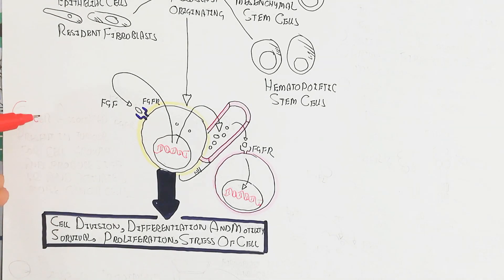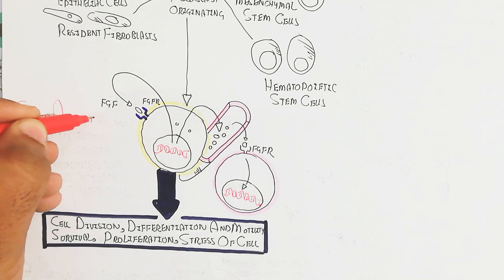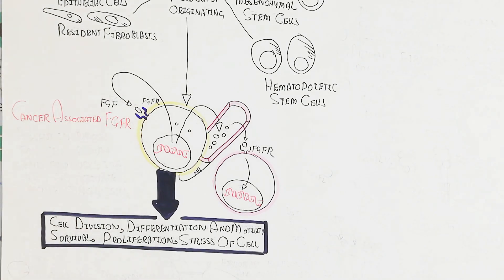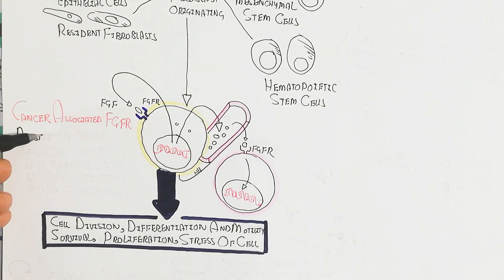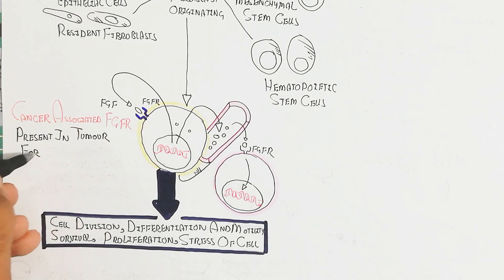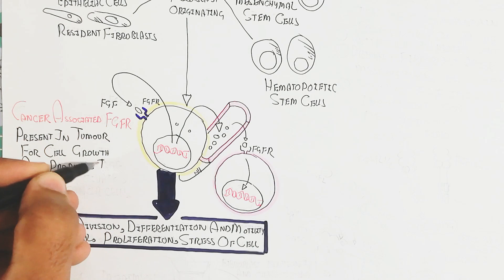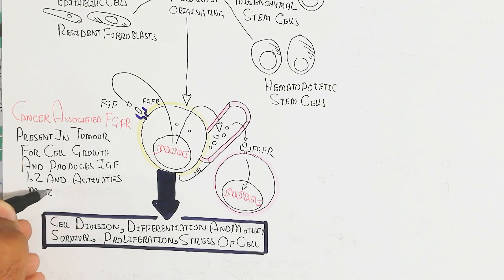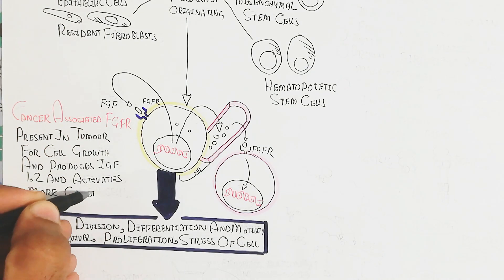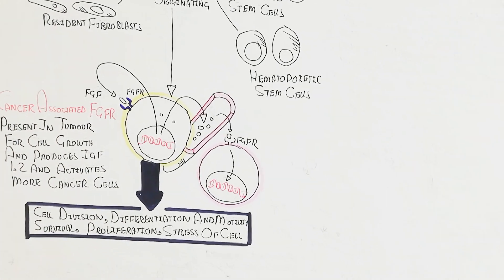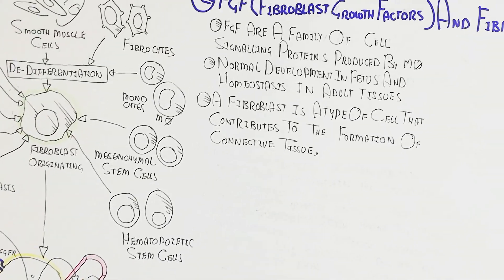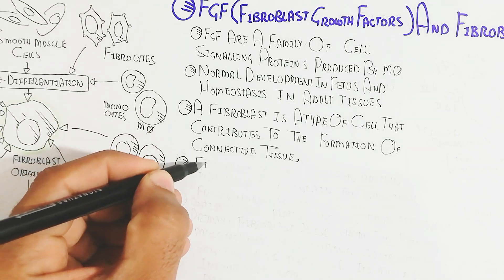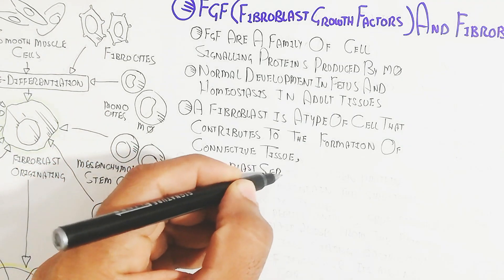During cancer, FGF receptors are present in tumor cells. The tumor cell produces IGF — insulin-like growth factor 1 and 2 — which activates more cancer cells. In this way, FGF is also important for cancer progression and metastasis.